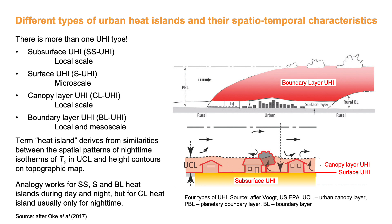Finally, the boundary layer urban heat island is the difference between the temperature of the air in the layer between the top of the urban canopy layer and the top of the urban boundary layer, and the corresponding air temperature in the rural planetary boundary layer. It is a local to mesoscale phenomenon and can be observed as a plume of warm urban air transported downwind of a city.